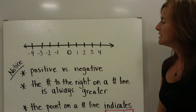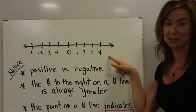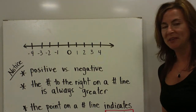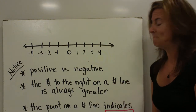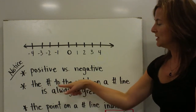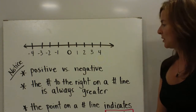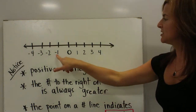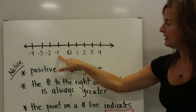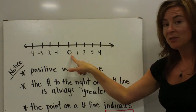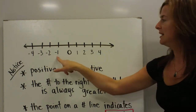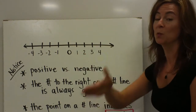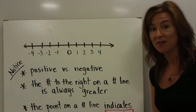Notice that we have our collection of whole numbers that include both positive and negative integers. We also want to point out, since we're going to be talking about comparing and ordering, that the number to the right on a number line is always greater. So if I start with negative 1 and look to the right, I know that 0 is greater than negative 1. Any number on the right on a number line is going to be greater.